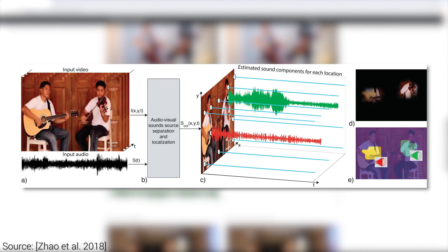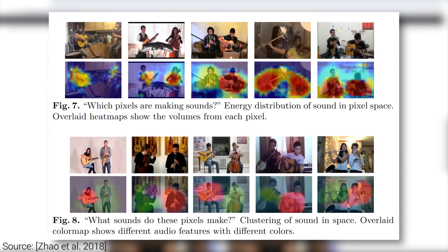How does this work? It is a neural network-based solution that has watched 60 hours of musical performances to be able to pull this off, and it learns that a change in sound can often be tracked back to a change in the video footage as a musician is playing an instrument.